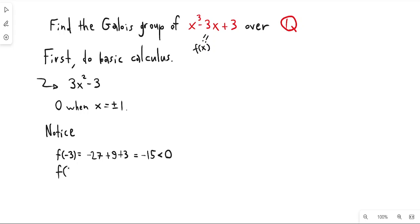Also notice that f(0) = 3 and f(2) = 8 - 6 + 3 = 5, which is greater than 0.